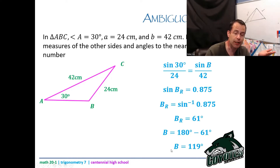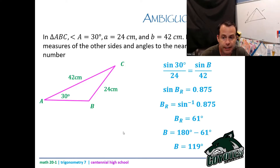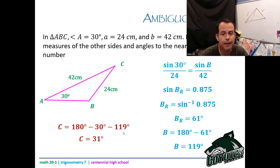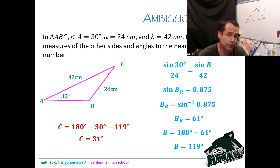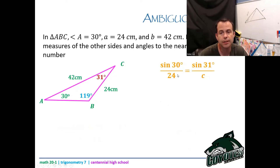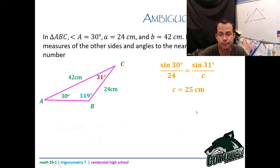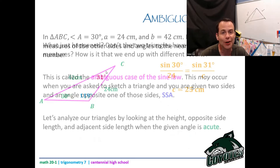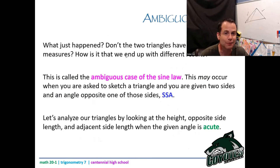Now that I know B is 119 degrees for the second case, I find C by going 180 minus 30 minus 119, which gives me 31 degrees. Then I do another sine law with C being 31 degrees to get side c: sine of 30 degrees over 24 equals sine of 31 over little c. That gives me 25 centimeters. So we have two different solutions from the same given parameters.